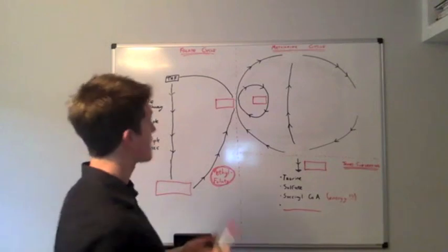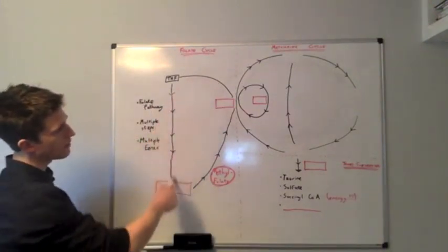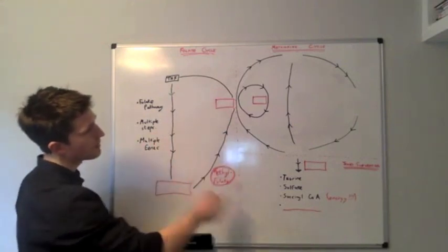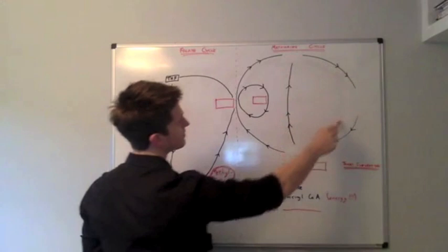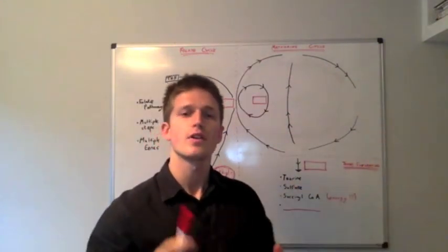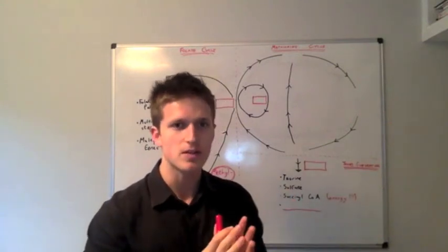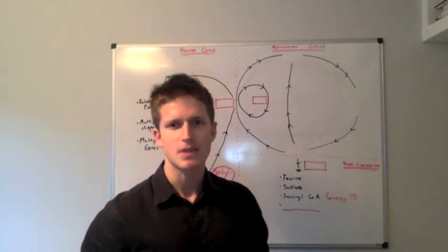But, what I want you to do is just pay attention to the arrows. So, the folate pathway goes around this way, and the methionine cycle goes around that way. So, the first thing I want to introduce you to is the concept of converting homocysteine back into methionine.